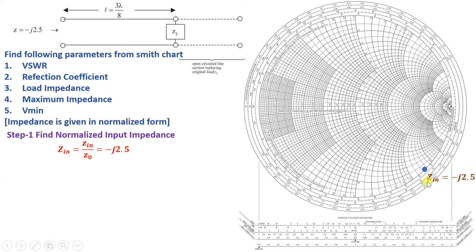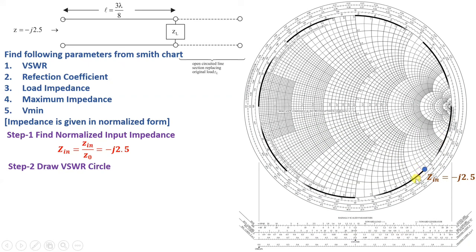Now that we have the Zin point, we can draw a circle with respect to the center of the Smith Chart, with the radial point at Zin. This will be our VSWR circle. We plot this VSWR circle with the center at the Smith Chart center and radius to Zin, shown here in black.